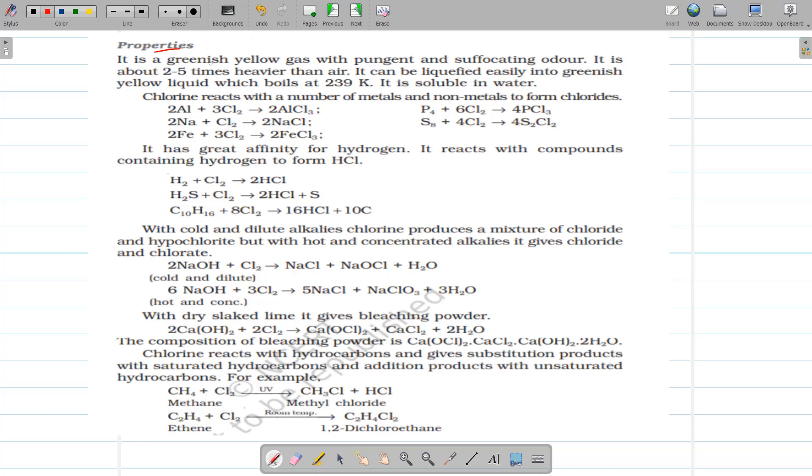Then are there its properties. It is a greenish yellow gas with pungent and suffocating odor and 2.5 times heavier than air. Chlorine reacts with number of metals and non-metals to form corresponding chlorides.